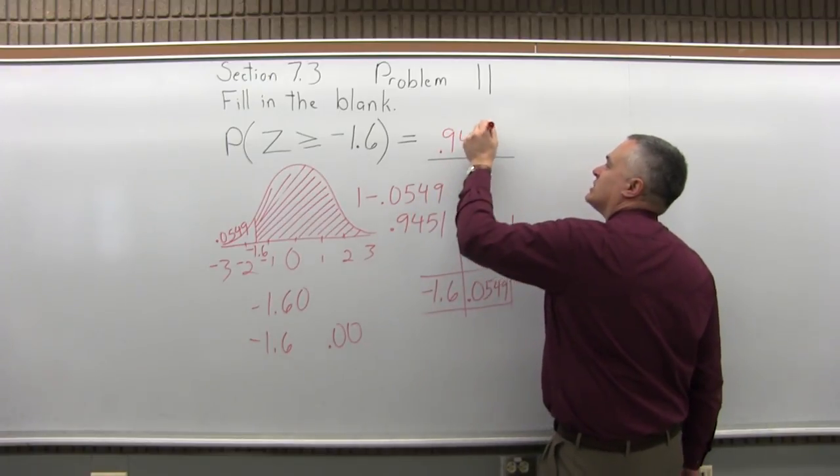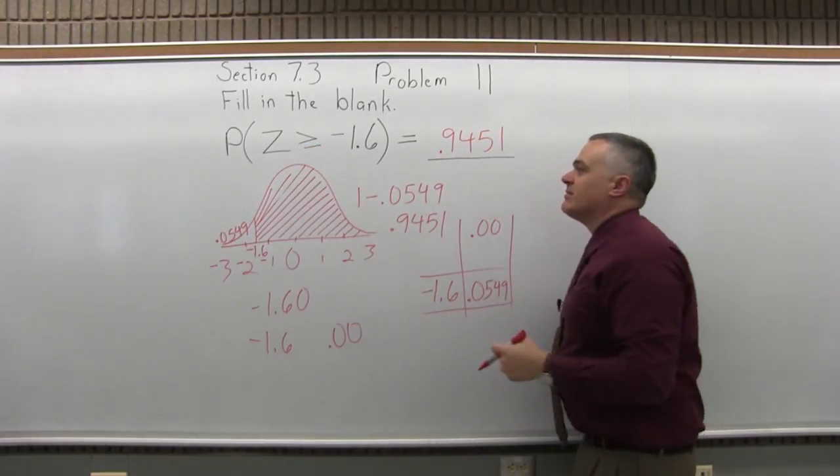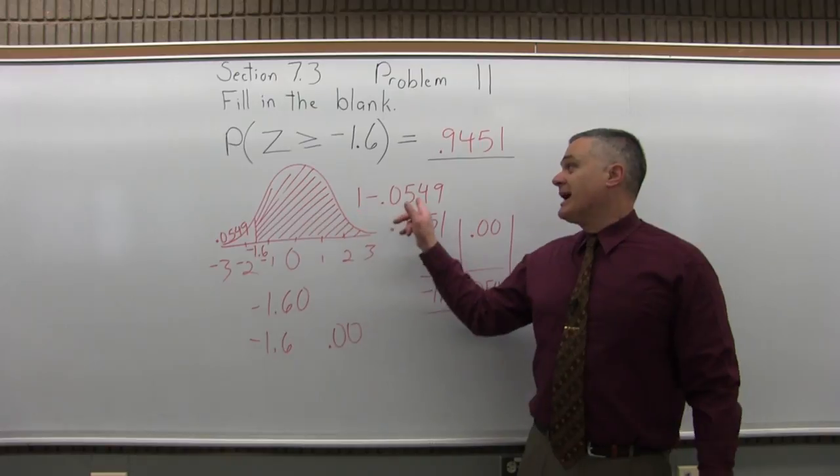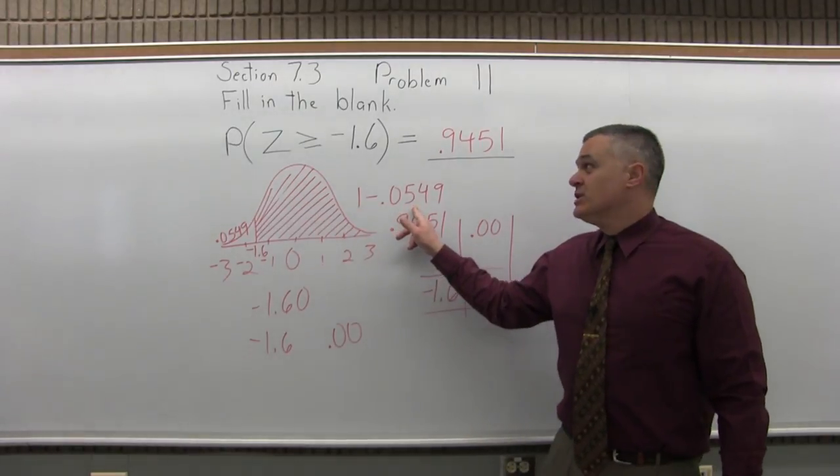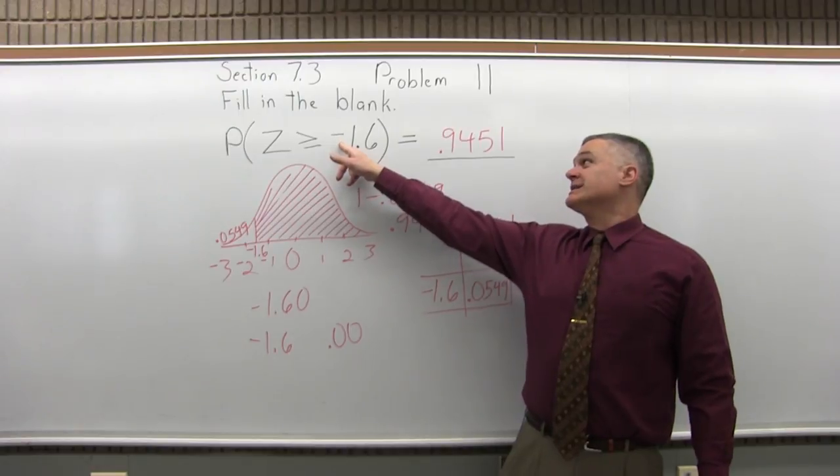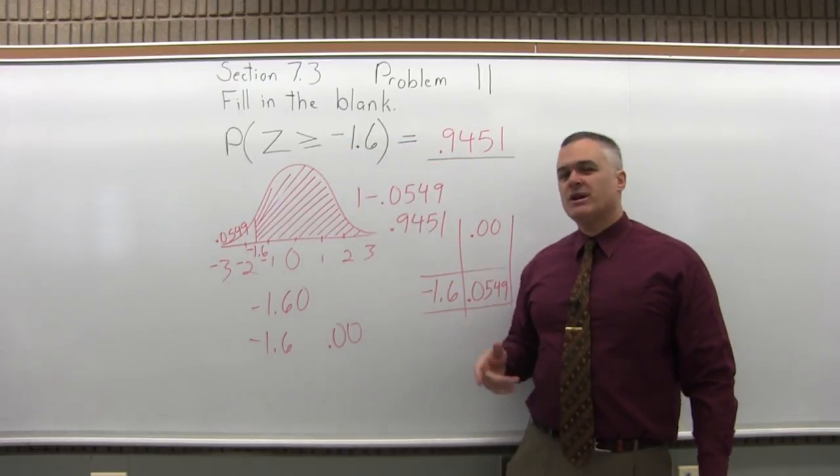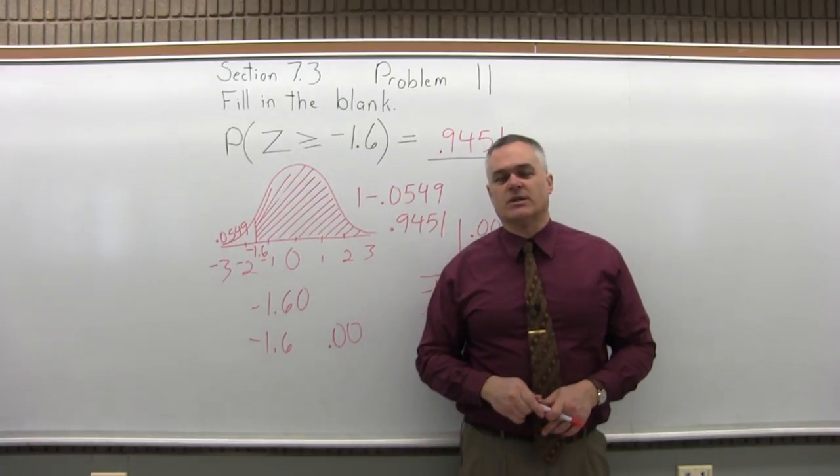That's what goes in the blank. So in general, any greater than question of this type, the answer is one minus the chart value. So the probability that Z is greater than or equal to negative 1.6 is equal to point nine four five one, about a ninety four and a half percent probability.